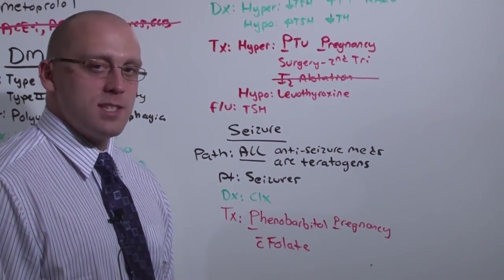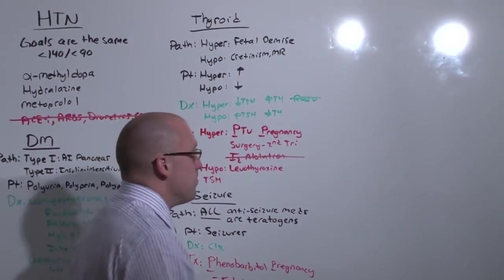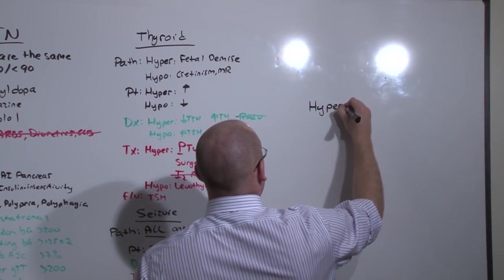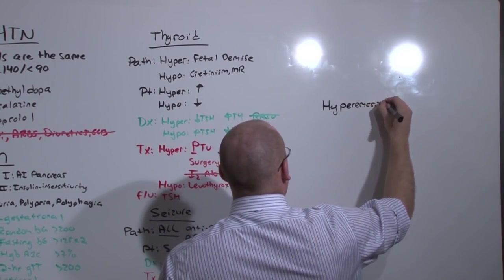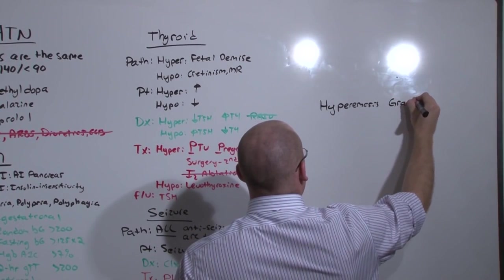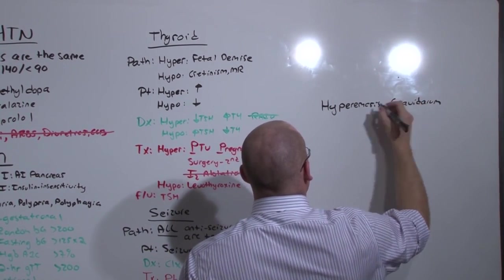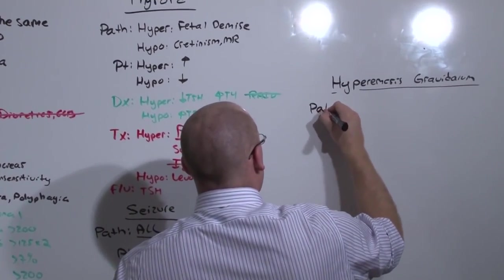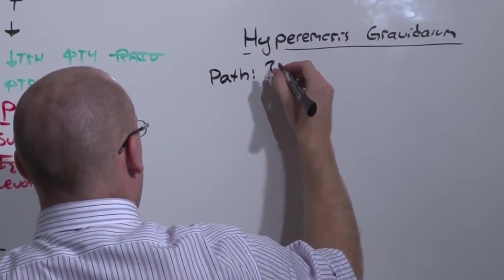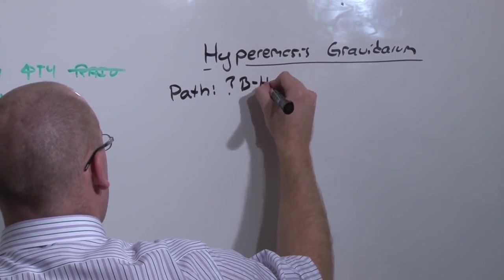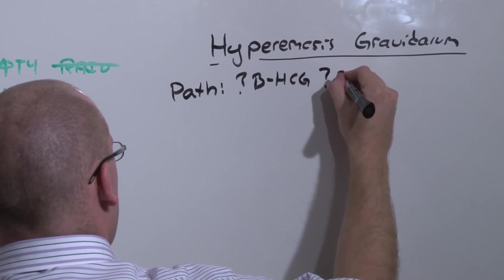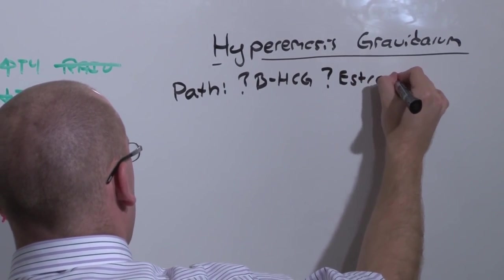And we're going to close with a disease that is unique to obstetrics, and that is hyperemesis gravidarum. You encountered hyperemesis gravidarum in the GYN lectures during discussions about moles. And we're not really sure what causes hyperemesis gravidarum. It's probably the beta-HCG, which is why you get it with moles, but it might be from estradiol.